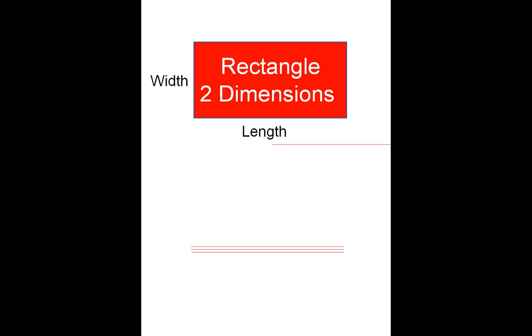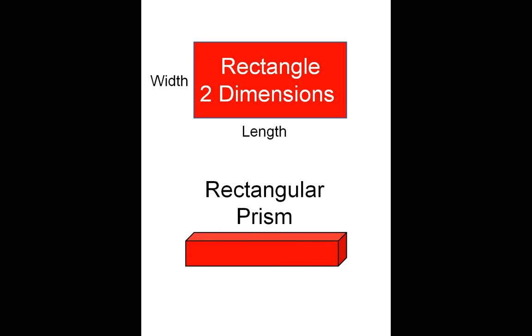So we add another and another and another, we just keep adding sheets of paper and before you know it, we'd have a rectangular prism. And that rectangular prism would be three-dimensional because it not only has width and length, now it has height. So height is the defining characteristic that gives us our three dimensions.